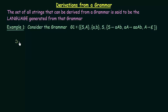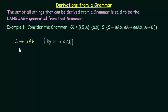Let us try to see some strings that can be generated from this grammar G1. Starting from the start symbol S, from S I can get AAB — that is, small a, capital A, and then B — using the production rule S gives AAB. Now let us try to further expand this: we have AAB, and there is a production rule which says AA gives AAAB.